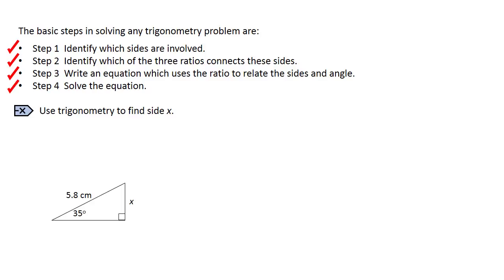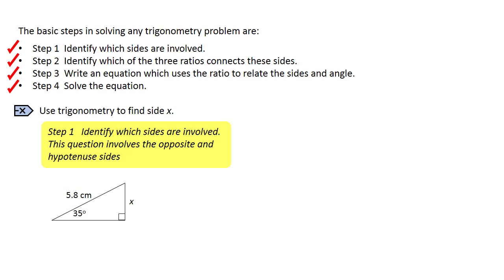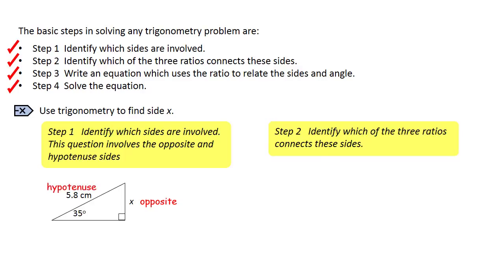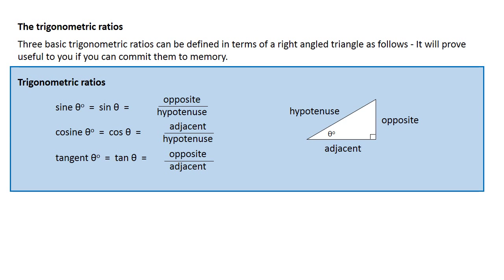Let's have a look at how this works in a worked example. Step 1, identify which sides are involved — this question involves the opposite and hypotenuse sides. Step 2, identify which of the three ratios connects together the sides. We look back at our notes to find the one which connects the opposite and hypotenuse sides. It's the sine ratio.